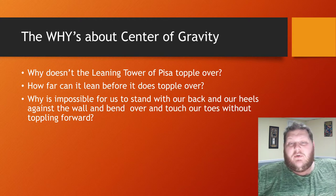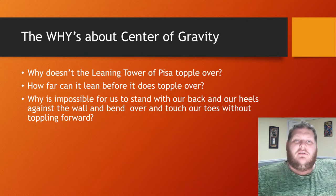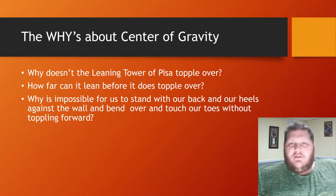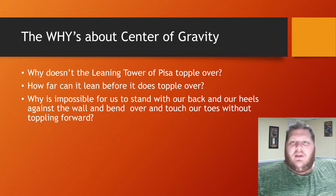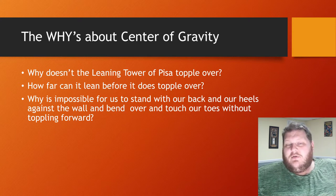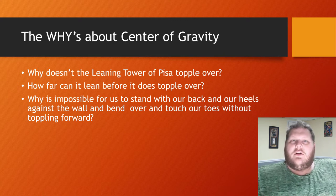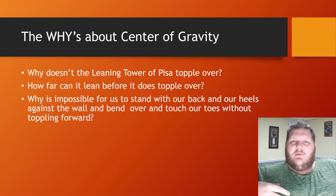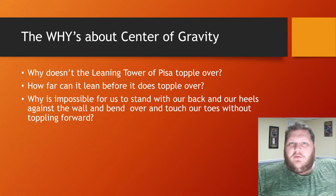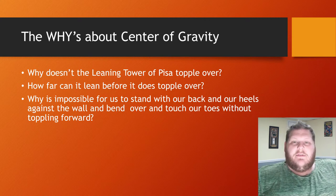The Leaning Tower of Pisa doesn't topple over because the center of gravity is still over its support base. You can try this yourself — stand with your heels against the wall and your butt against the wall, then bend over. You can't touch your toes without starting to fall forward, because as soon as our center of gravity extends beyond our base, we lose control and fall forward.